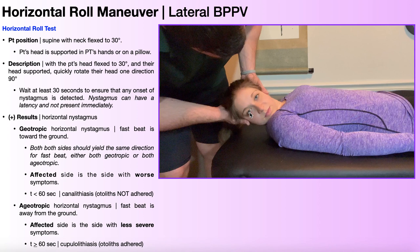Everything is opposite with ageotropic nystagmus. If you have ageotropic nystagmus, you would expect it to last longer than a minute, and if it lasts longer than a minute, that is a cupulolithiasis where the otoliths are adhered to the cupula. In this case, the affected side is the side with less severe symptoms. So if the patient reports rotation to the right was worse, the left side is actually the affected side.